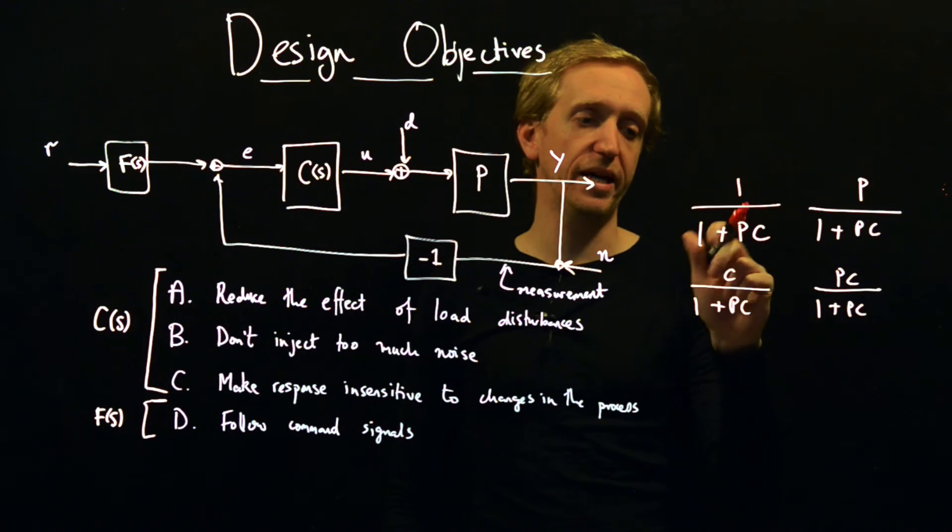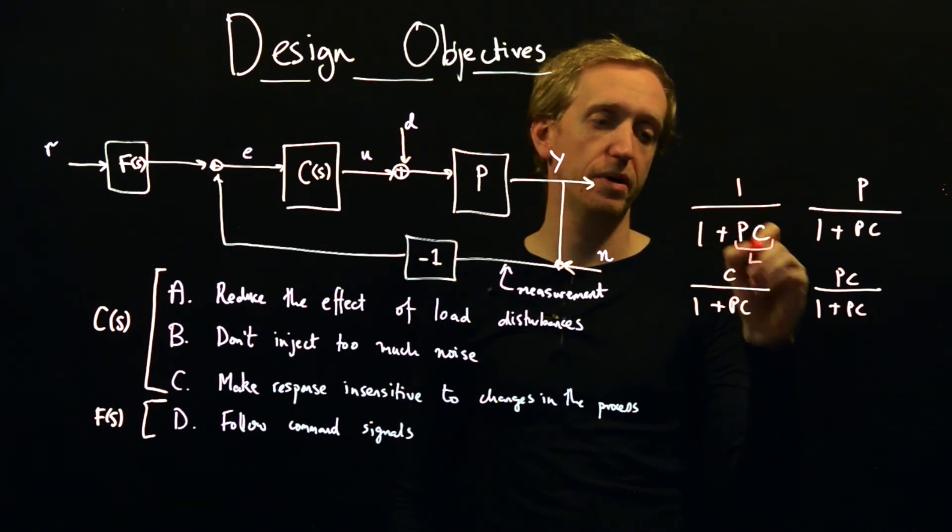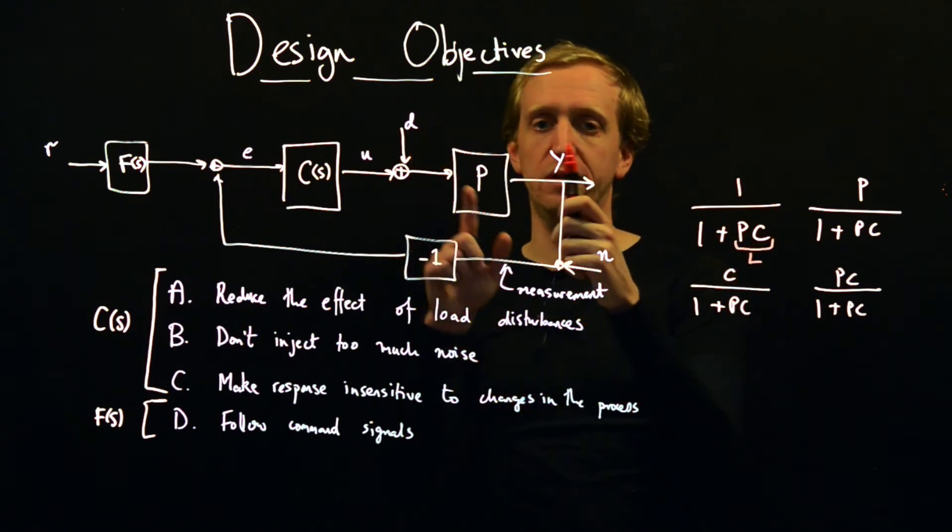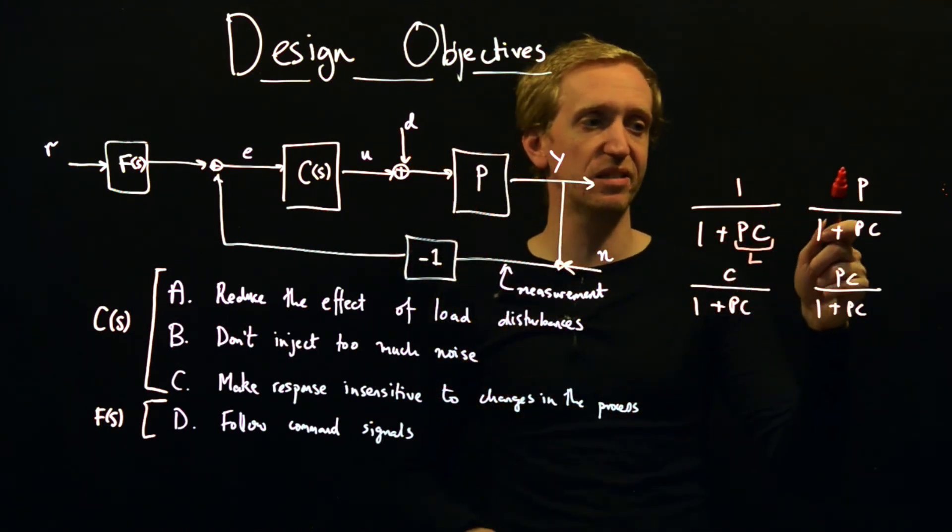And that's that you obtain from the loop gain, which is the product of everything in the feedback loop. Except for this minus 1 and then plus 1. So this PC, if we had more blocks, we'd just have more terms in here. So this is the loop gain. This is often called L. And then in the numerator, if we want to find out what signals map to what, you just have to insert the blocks that lie between the two signals in the feedback loop.